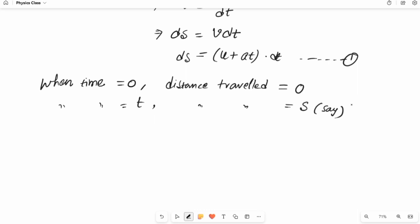Now let's integrate equation one with these limits. So it will be integration ds from 0 to s equals integration u plus at dt with the limits as 0 to time t.